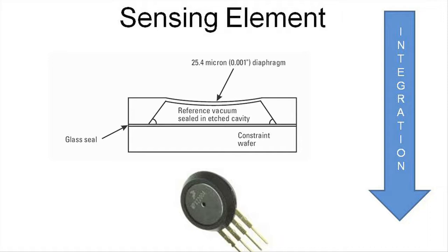The pressure sensor structure shown here has a millivolt-level signal with an uncalibrated and temperature-sensitive output. That product can be used by a customer who can do the signal conditioning themselves, or the manufacturer could provide that inside the package in one manner, to take it to the next level of a sensing component.